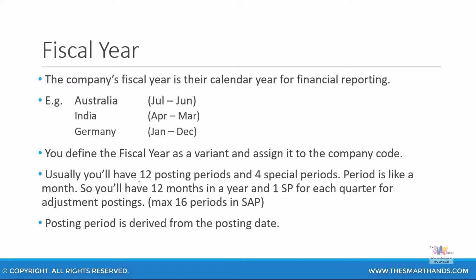You have 12 posting periods, that is the 12 months of the year — whether it's January to December, April to March, or July to June, it will be 12 months. You can also have something called four special periods. At the end of each quarter, you can have extra periods — up to four special periods — if you want to do some postings outside of your regular financial statements.